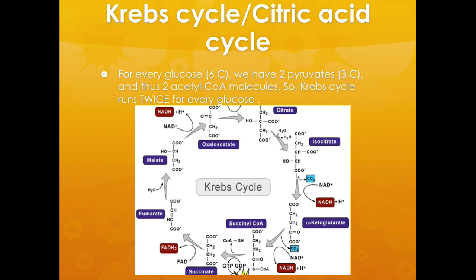You should be familiar with the overall look of the Krebs cycle, but it's not necessary to memorize each and every single step. For every glucose, which is 6 carbons, we have two pyruvates, which are 3 carbons, and thus two acetyl coenzymes. So the Krebs cycle runs twice for each glucose molecule. Basically, acetyl coenzyme A is combined with oxaloacetic acid to form citric acid. Citric acid is then broken down one carbon at a time and rearranges to reform the original oxaloacetic acid molecule.